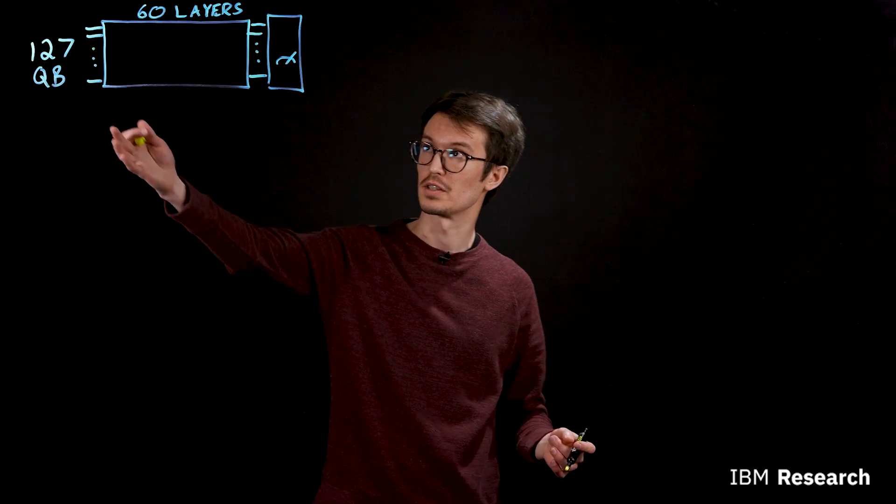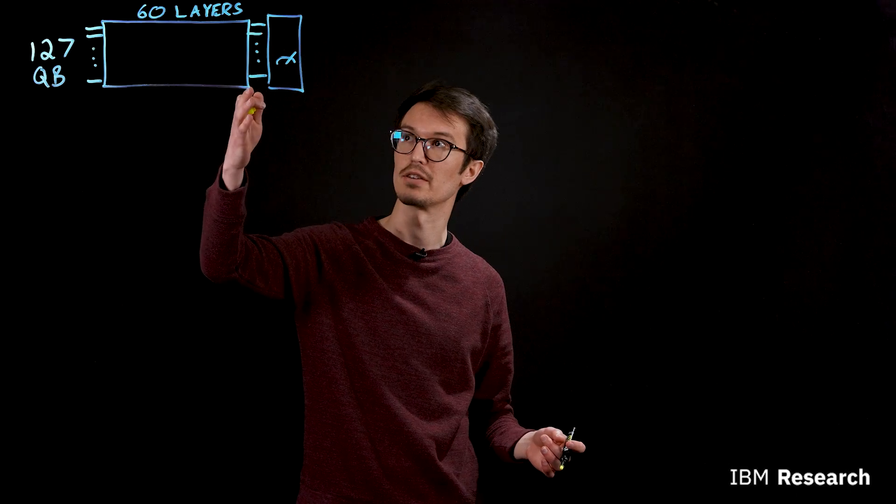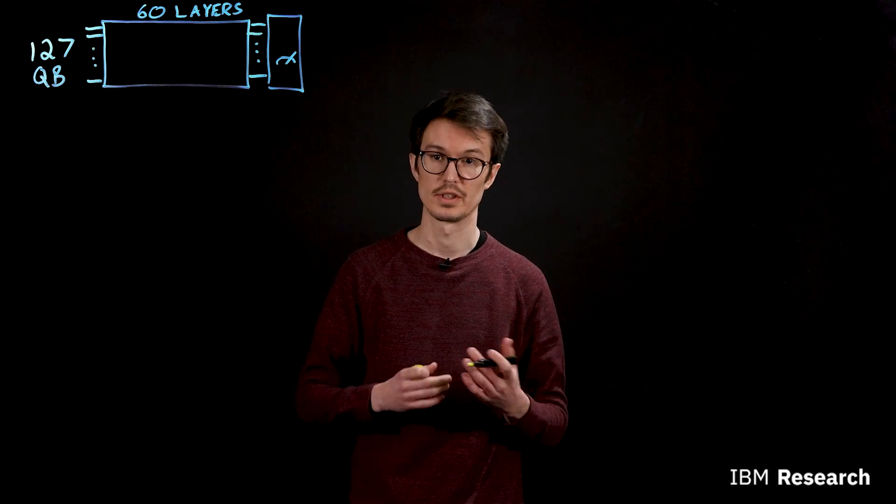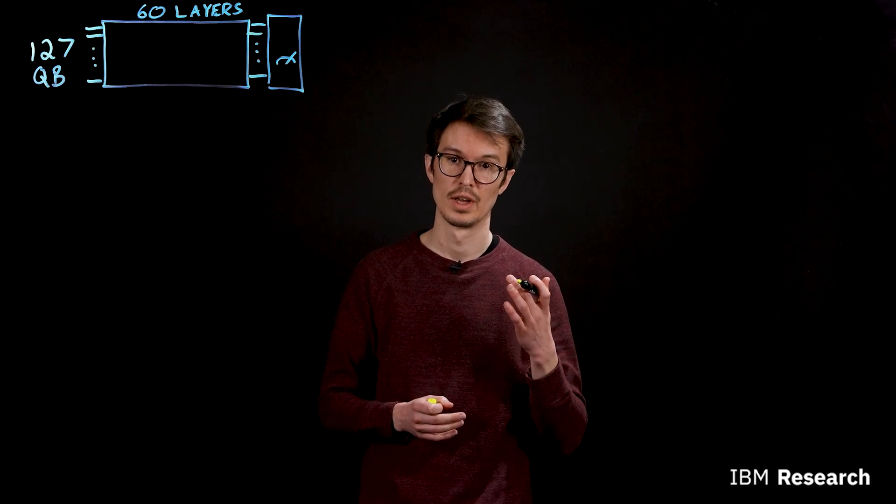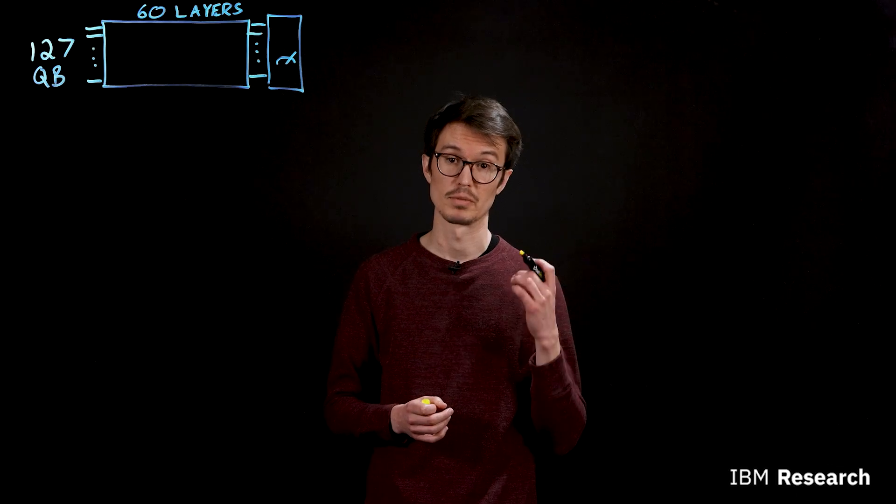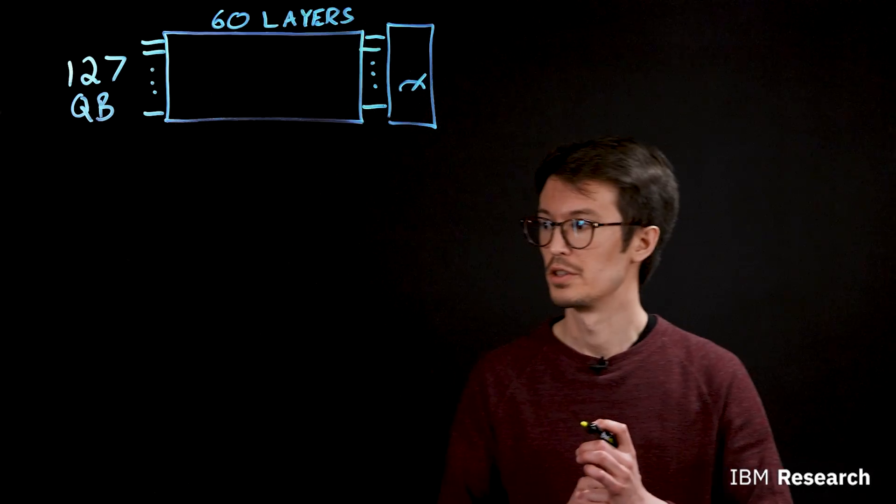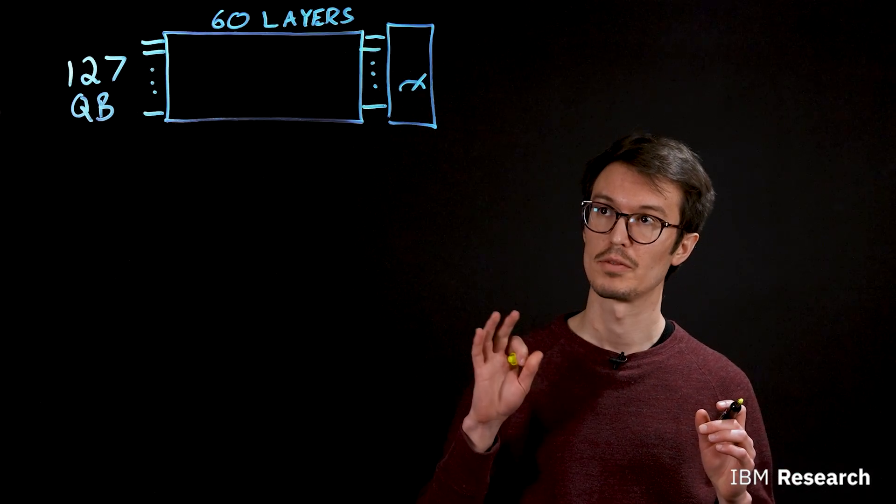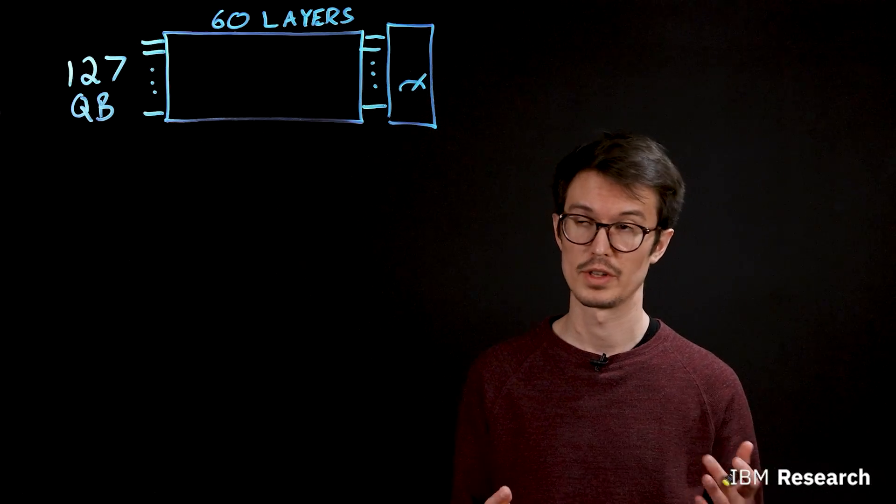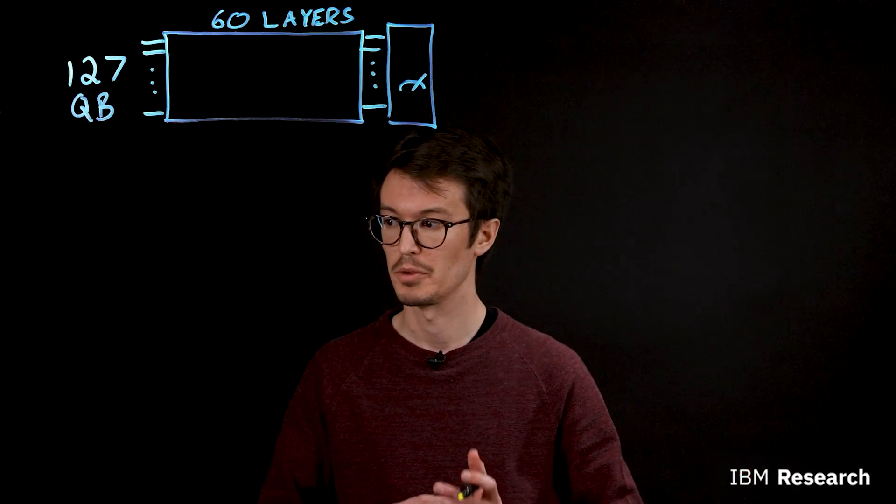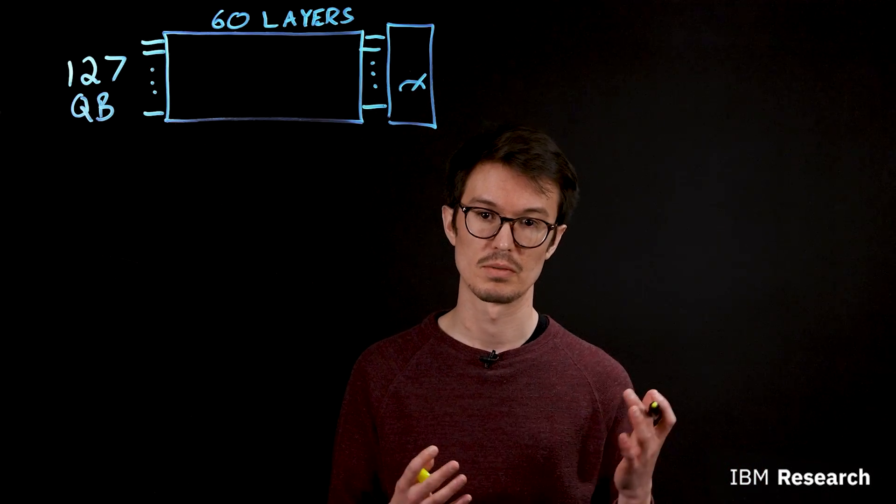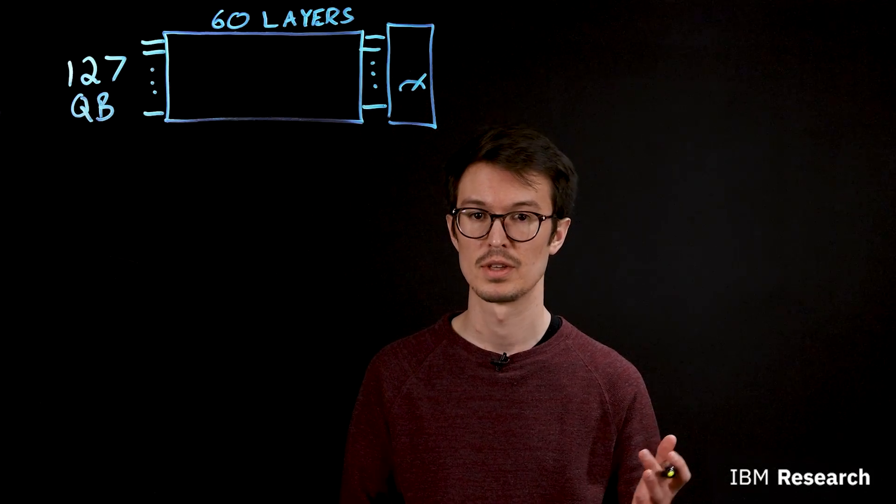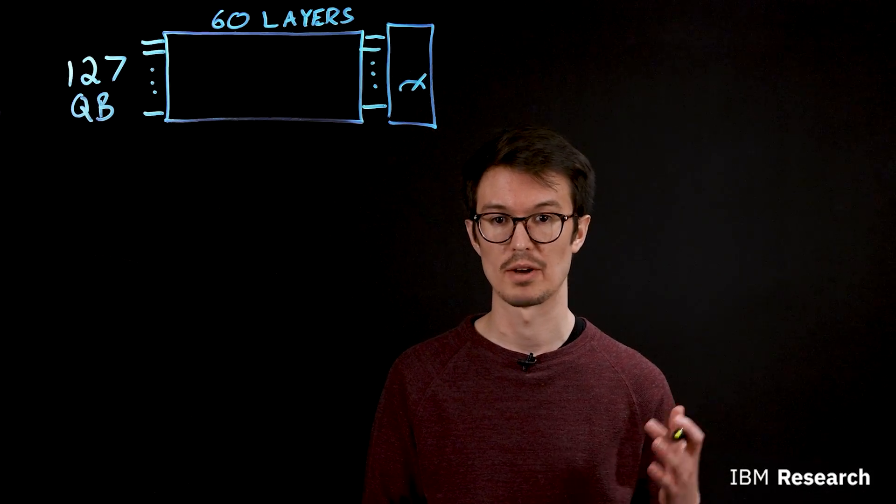And the number of gates in these 60 layers, or the 60 layer depth of the circuit, is roughly double our previous record reported last year at IBM Quantum Summit in 2022. So even though today's quantum computers are not perfect, they have some noise in the hardware, we're still able to extract useful results or reliable results using a class of techniques known as quantum error mitigation.